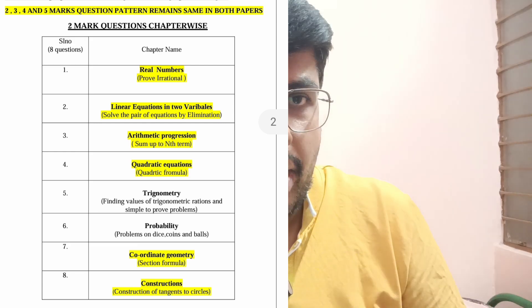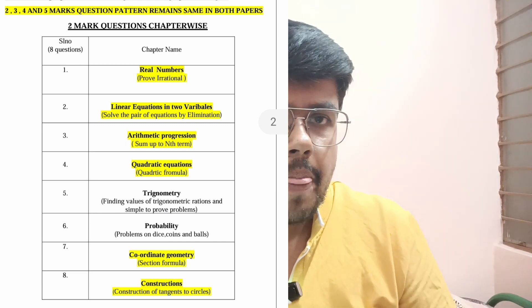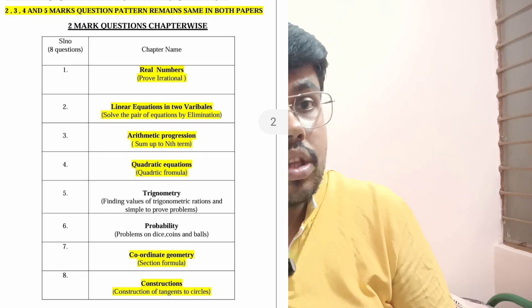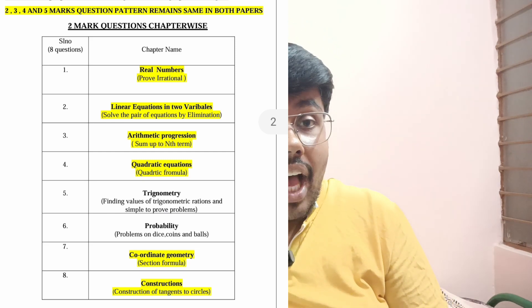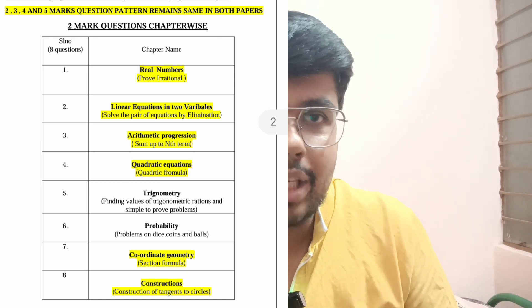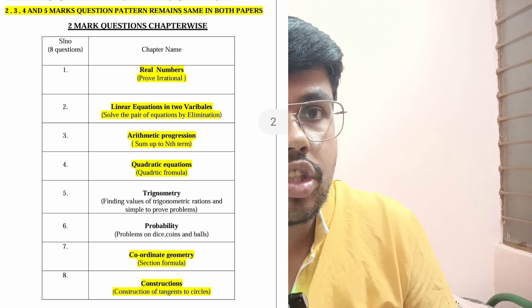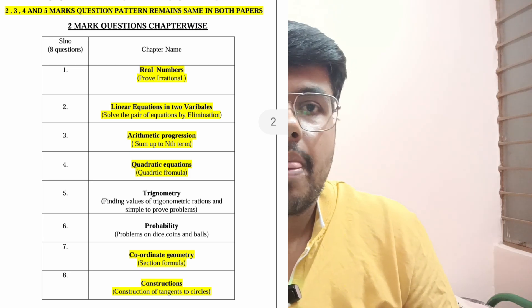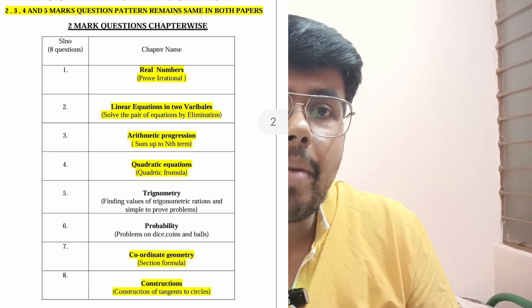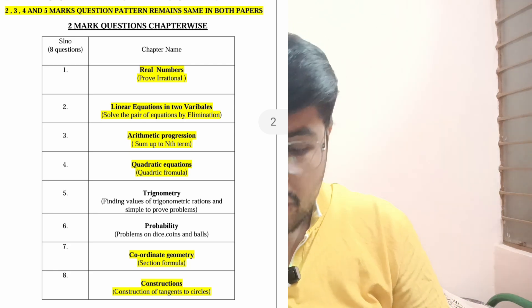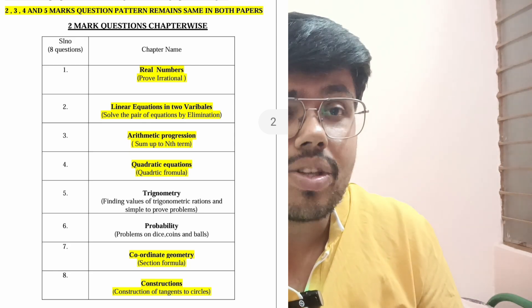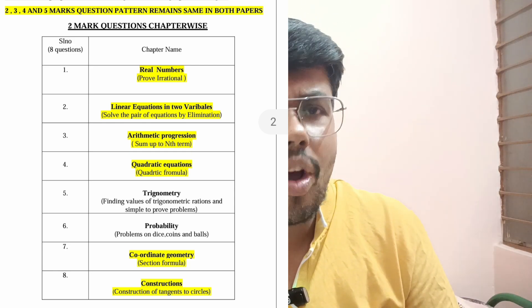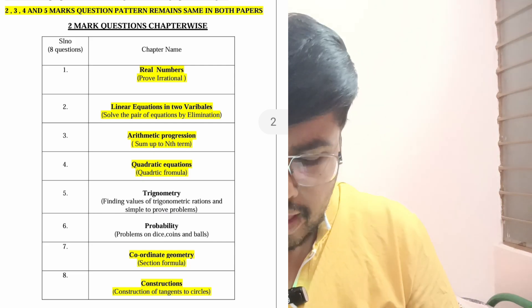Probability is a definite question for two marks. Lastly, trigonometry to-prove problems. Out of these eight questions, the only change I expect is trigonometry can go to three marks, and triangles — which is asked for three marks — can come for two marks. Other than that, all else remains the same. Seven questions are direct and simple — they come in the passing package itself. So 14 marks is an easy getaway. Only trigonometry or triangles require some effort.